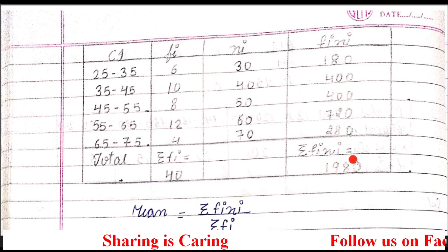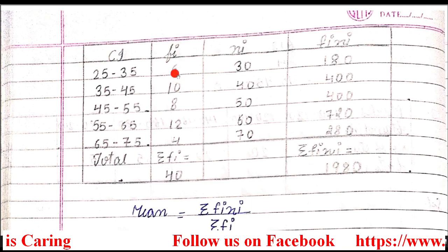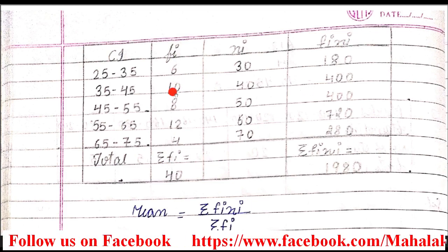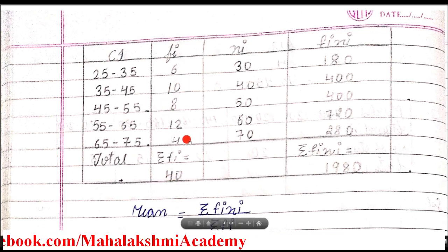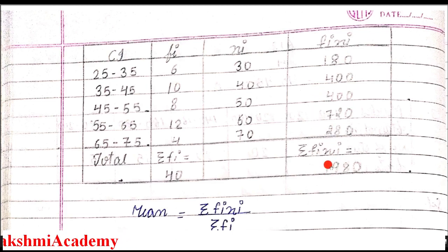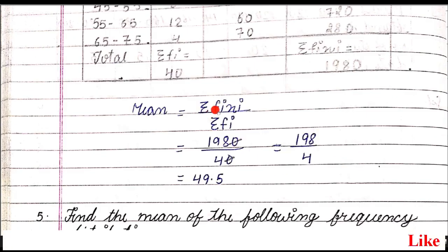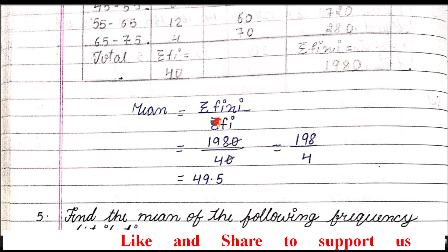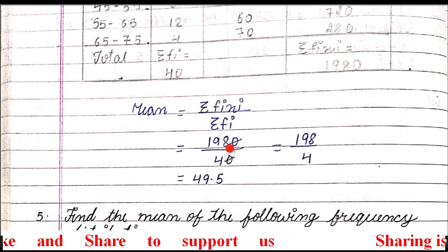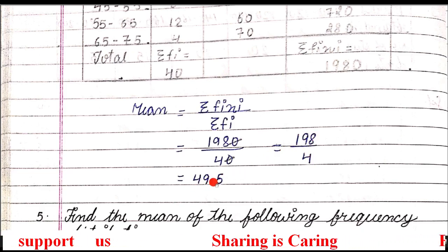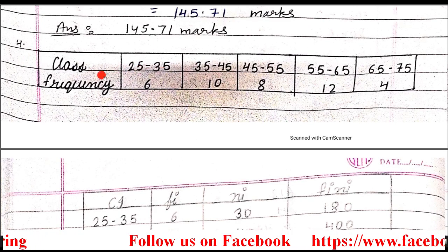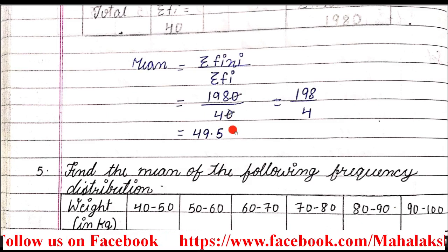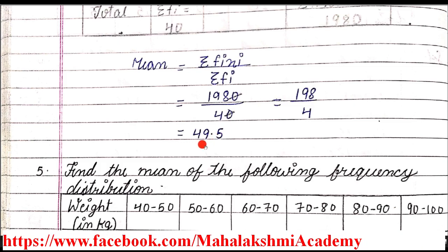Write down the fi·xi answers here, then add them. The last row is of total — we need the totals of fi and fi·xi only. Sigma fi, the sum of frequencies, is 40. And adding all fi·xi values gives 1980. To find out the mean, the formula is sigma fi·xi upon sigma fi. Putting sigma fi·xi as 1980 and sigma fi as 40, canceling zero gives 198 upon 4. Dividing gives 49.5. Since there is no unit mentioned in the question, we will not write any unit. So the mean of this question is 49.5.